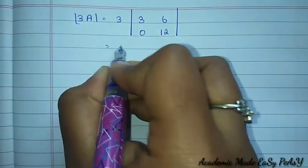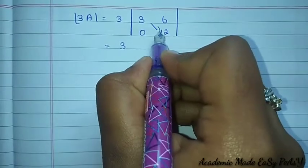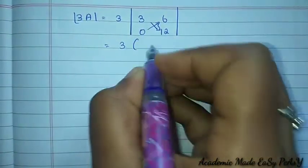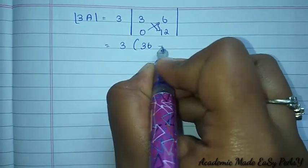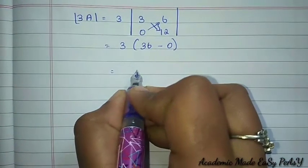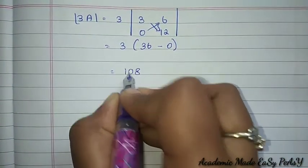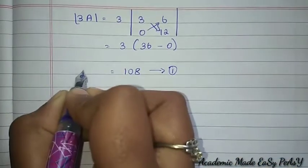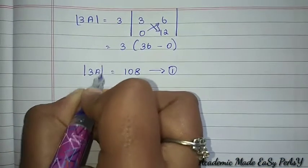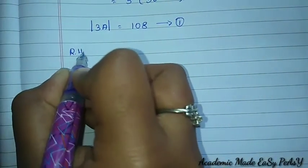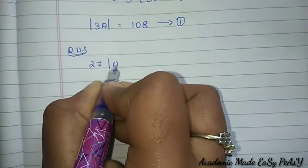Expanding: 3 × (3 × 12 − 6 × 0) = 3 × 36 = 108. So det(3A) = 108 — let this be Equation 1.